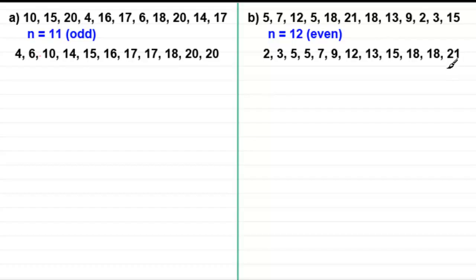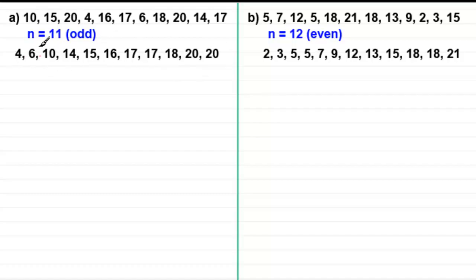When it comes to finding the median, it's the observation in the middle of your list of data. You often see people counting one from each end working toward the middle, and with a small set that's straightforward. But I'm going to show you a method designed to cope with any set of data, especially large sets where it becomes impractical to keep ticking off values at either end. Let's find the median of each set of data — to get the median, we need to find the position it's going to be in.